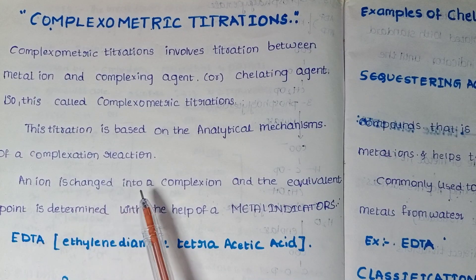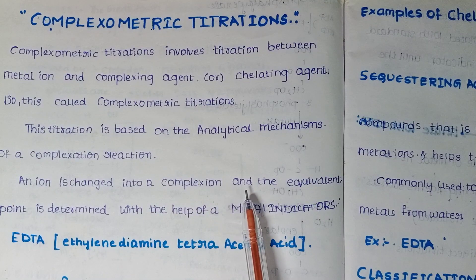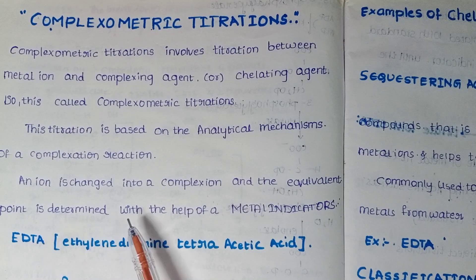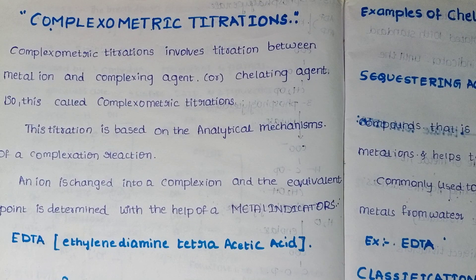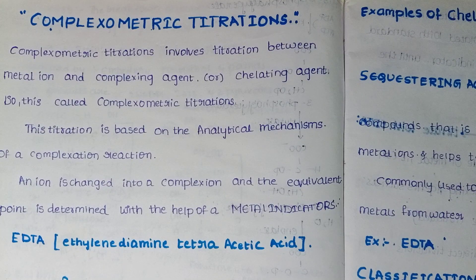An ion is changed into a complex ion. The equivalent point is determined with the help of metal indicators. We use the metal indicators at the perfect end point — not only metal indicators but every indicator. If we use an indicator, the color change tells us the end point — either from colorless to pink or pink to colorless, based on the indicator we are using, such as phenolphthalein indicator.